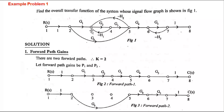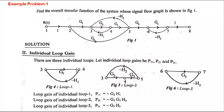Now identify all the loops. Loop 1: 3 to 4, then 4 back to 3. Loop 2: 3 to 4 to 5, then 5 back to 3 — this is a closed path. Loop 3: 6 to 7, then 7 back to 6. In the second step, draw these loops separately and label them. Identify all loops and draw them in any order — the order does not matter.